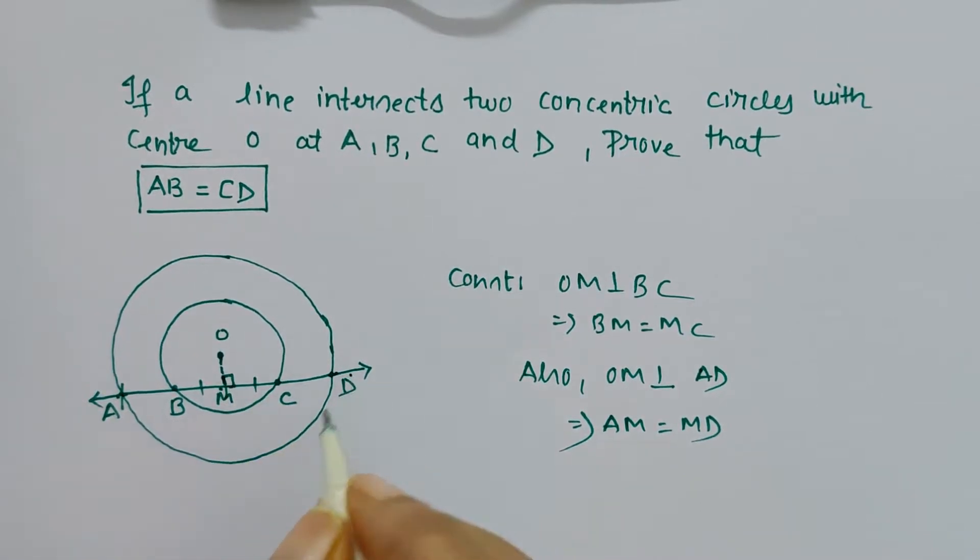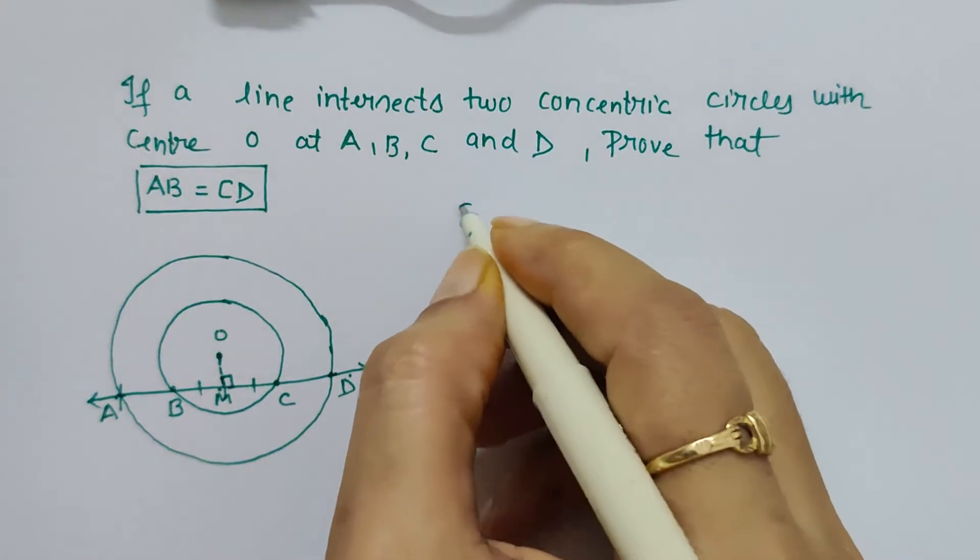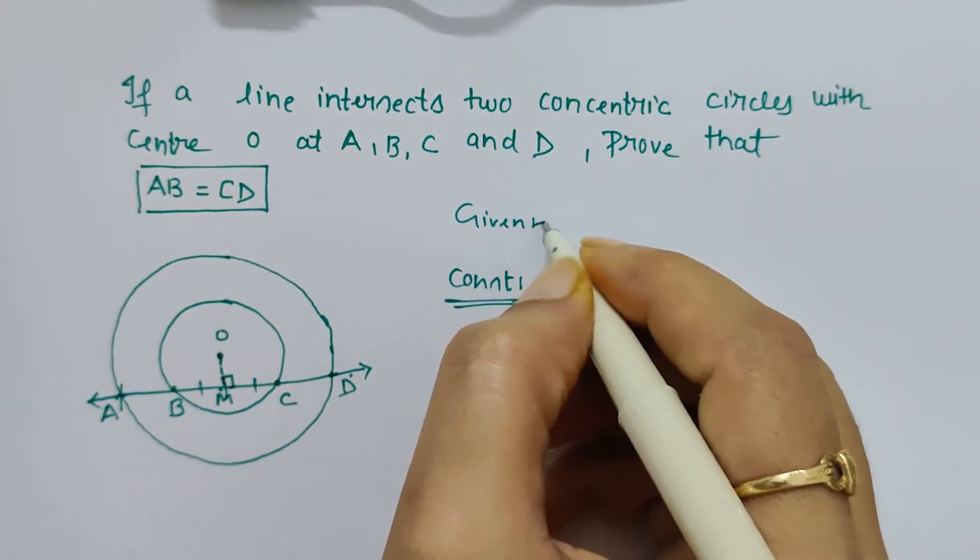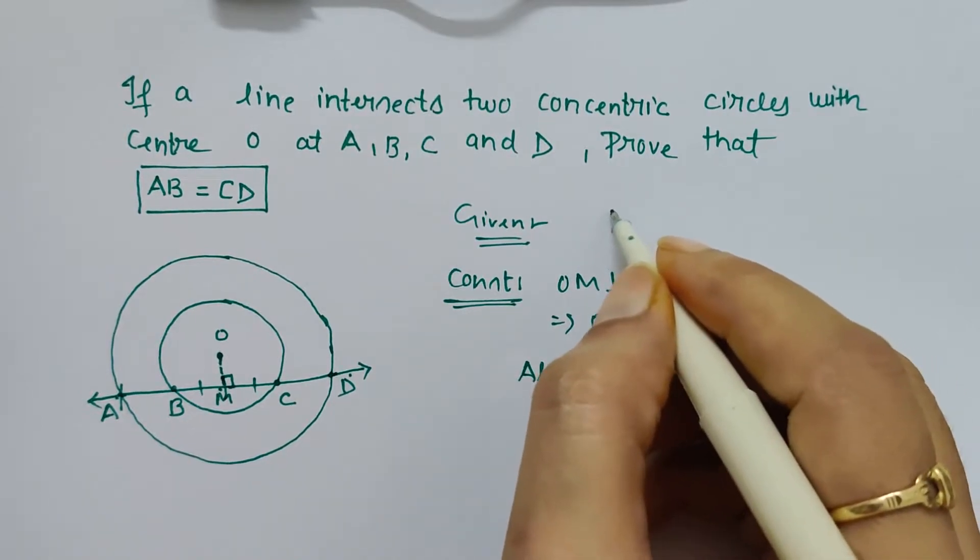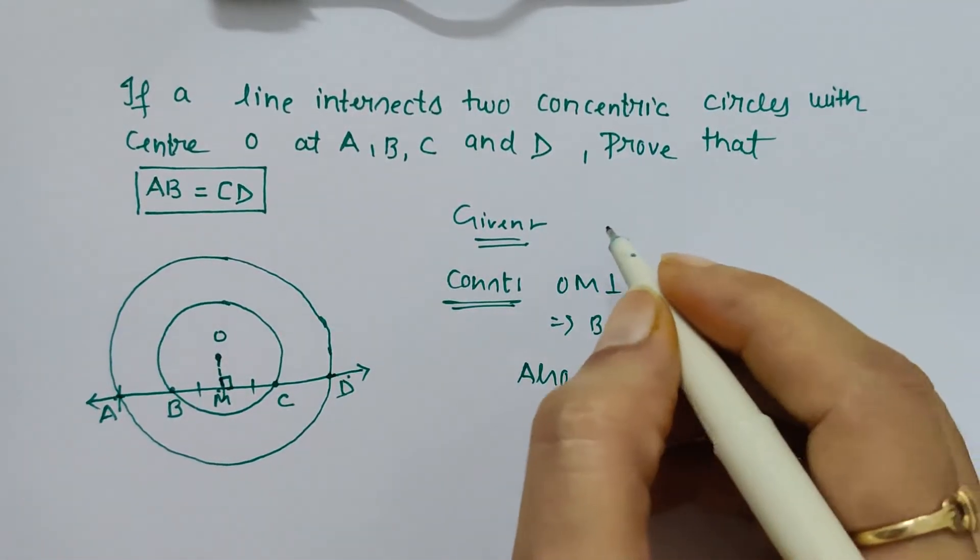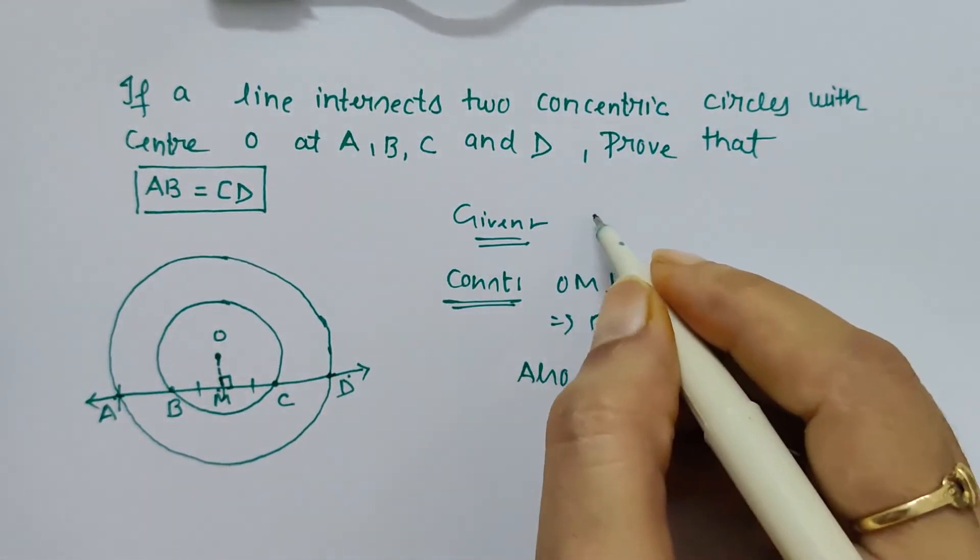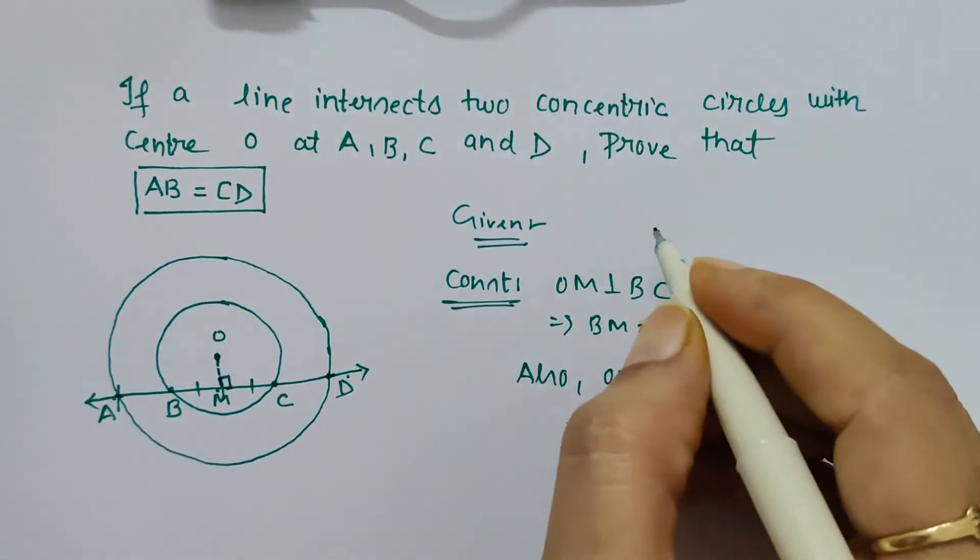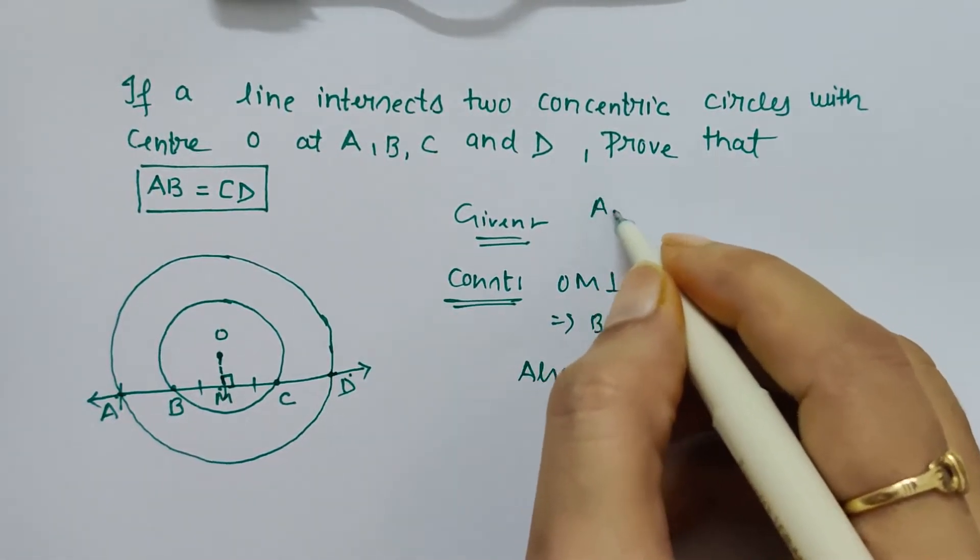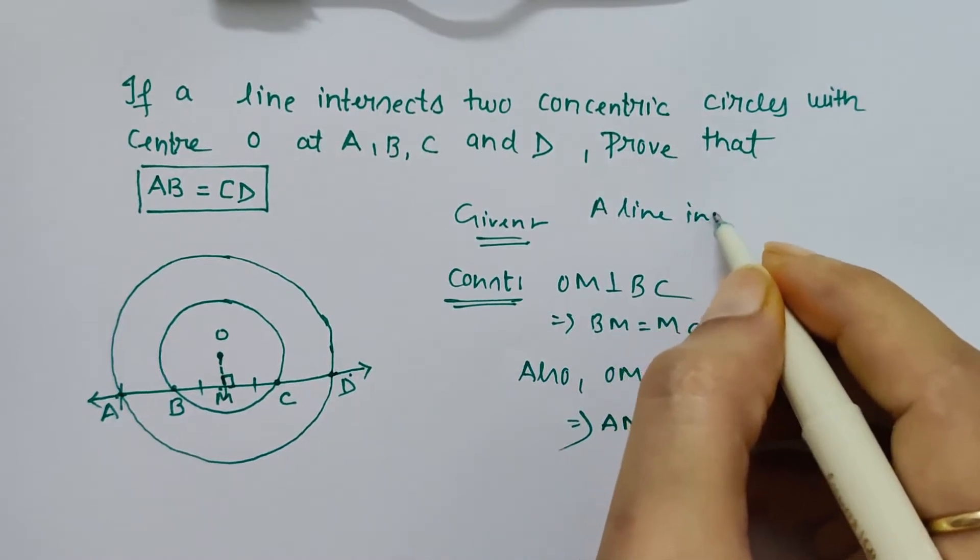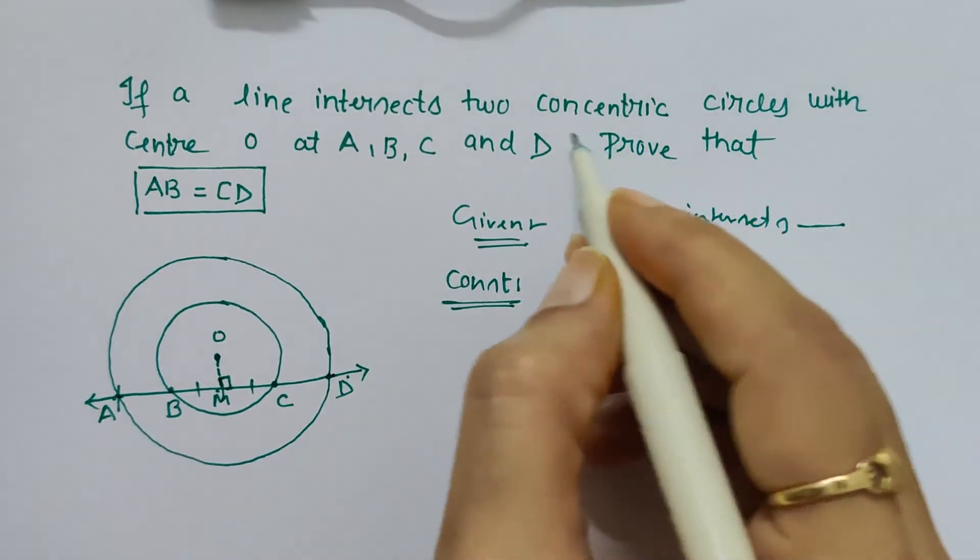Now let's prove it. In the 'given' section, we write whatever is in the question: A line intersects two concentric circles with center O at points A, B, C, and D.